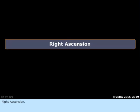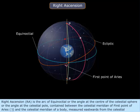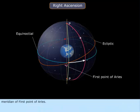Right Ascension is the arc of the equinoctial, or the angle at the center of the celestial sphere, or the angle at the celestial pole, contained between the celestial meridian of the first point of Aries and the celestial meridian of a body, measured eastwards from the celestial meridian of the first point of Aries.